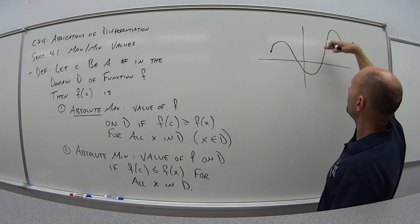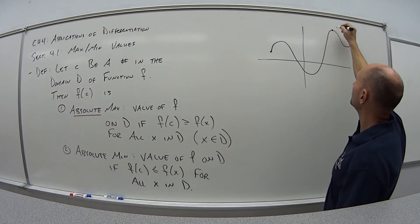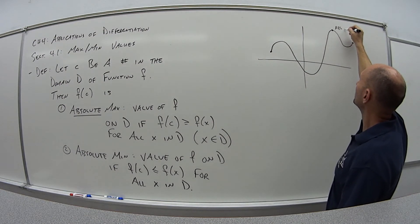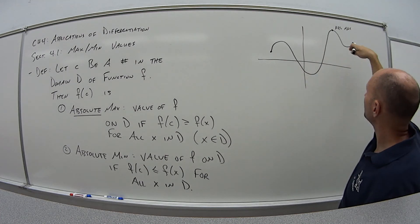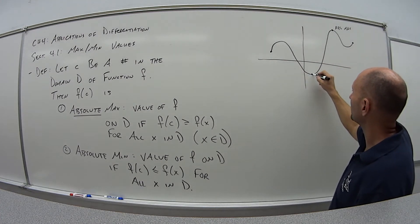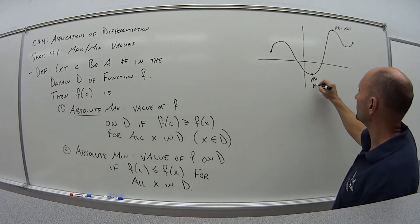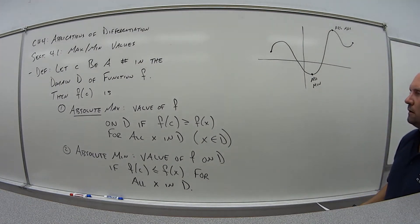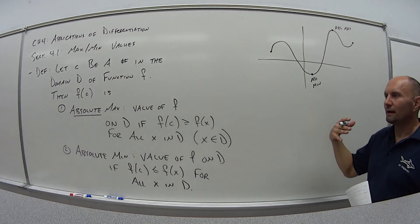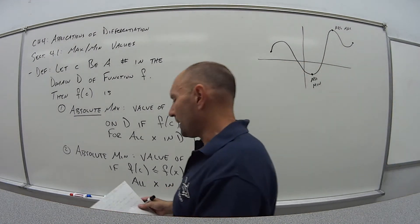So the absolute max would be what? Well, the absolute max would be the highest point this function ever gets, which would be here. And the absolute min is what? Well, it's the lowest value that this function ever gets, which would be here. So that's our absolute max, absolute min.